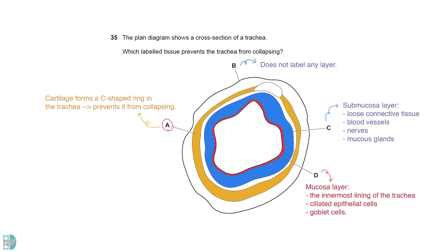D is the mucosa layer. It is the innermost lining of the trachea, composed of ciliated epithelial cells and goblet cells.